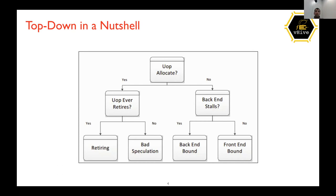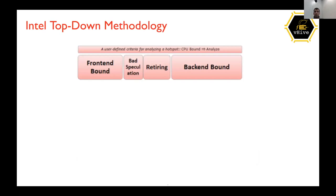We want to classify bottlenecks by counting whether we have empty slots or not. For each slot, in each clock cycle, we ask whether it gets a micro-operation or not. If it gets a micro-operation and that micro-operation eventually retires, we put it in the 'retiring' category. If it gets a micro-operation but it doesn't eventually retire, we're talking about 'bad speculation.' If the slot remains empty, we can distinguish between front-end and back-end bound overheads.